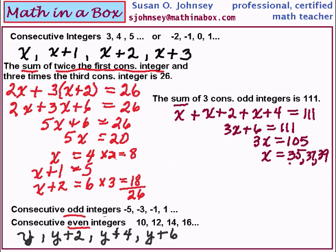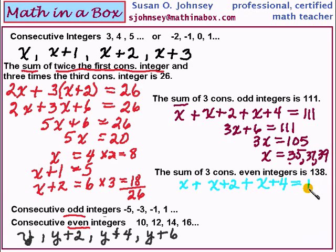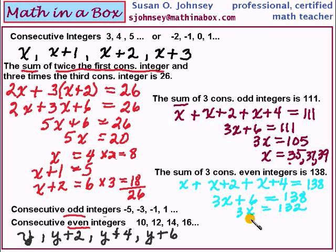Let's do a problem that's very similar but using even integers. We want three consecutive even integers that equal 138. Again we use x, x plus 2, and x plus 4 — consecutive even integers also go up by 2, same as the odds. The left side of the equation is really the same; the difference is that the sum on this one is 138. Simplifying: 3x plus 6 equals 138, so 3x equals 132. Divide by 3 and x equals 43.